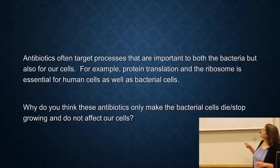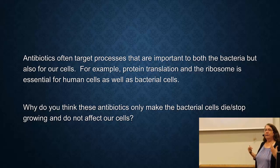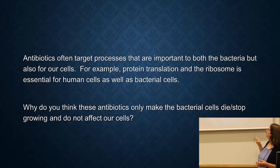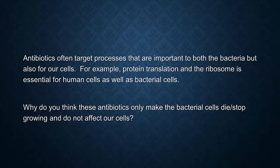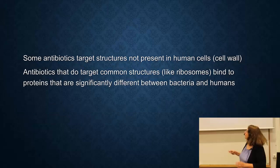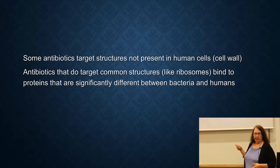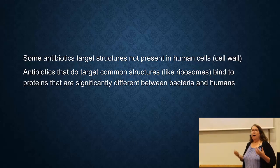Overall, antibiotics target processes that are important for bacteria but also for our cells. For example, protein translation and the ribosome are essential for human cells as well as bacterial cells. So why do these antibiotics only make bacterial cells die or stop growing and not affect you? Some antibiotics target structures not present in human cells — for example, the cell wall. And the antibiotics that do target common structures like the ribosome target proteins that are significantly different in humans than they are in bacteria.